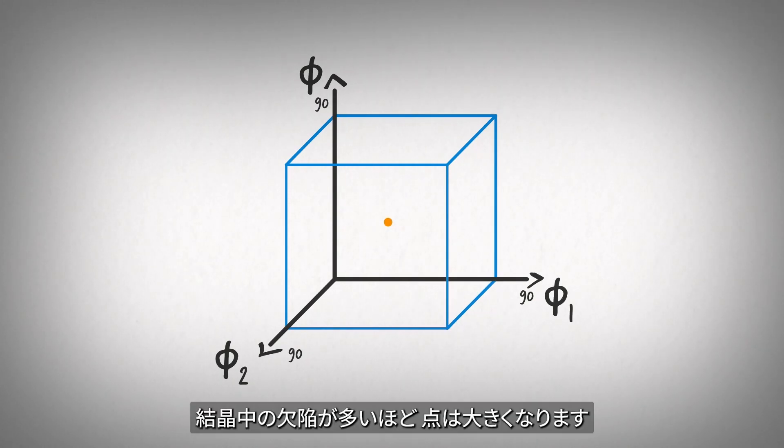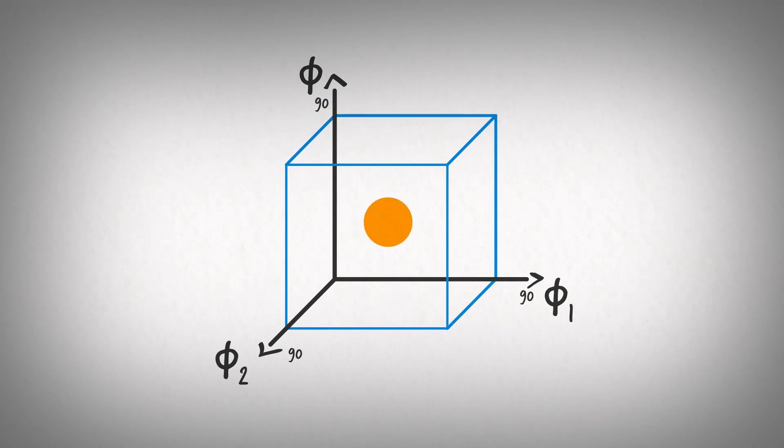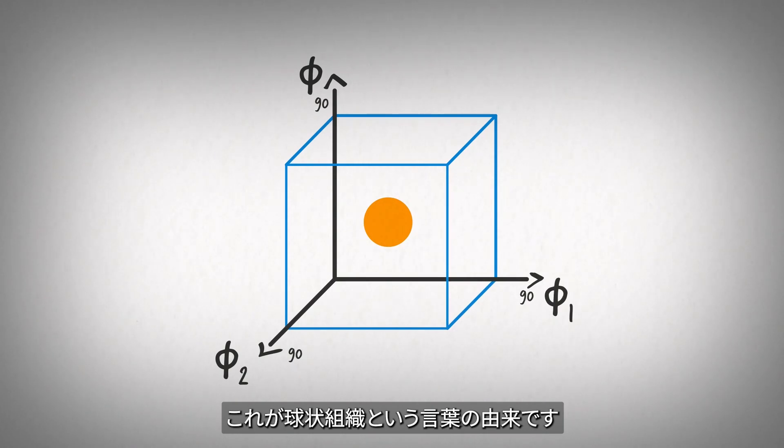The more defects in the crystal, the larger the spot. This is where the term spherical texture comes from.